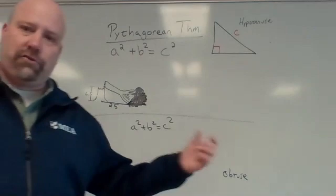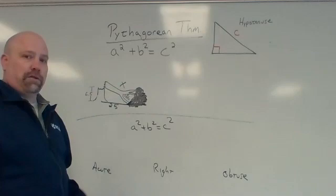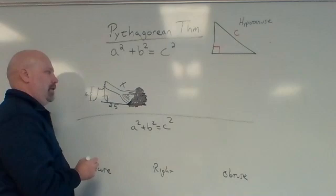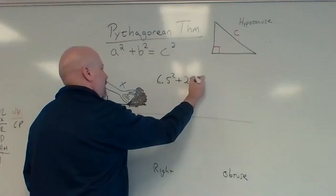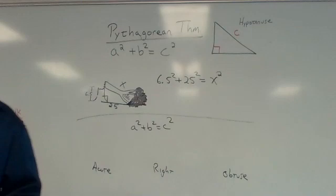And so we're trying to figure out how big the tree was when it was standing. And so we want X. Now, to do this, we realized that it was standing straight up. It's a right triangle right here. And so we're going to do 6.5 squared plus 25 squared equals X squared. X had to be C because it was across from the 90.